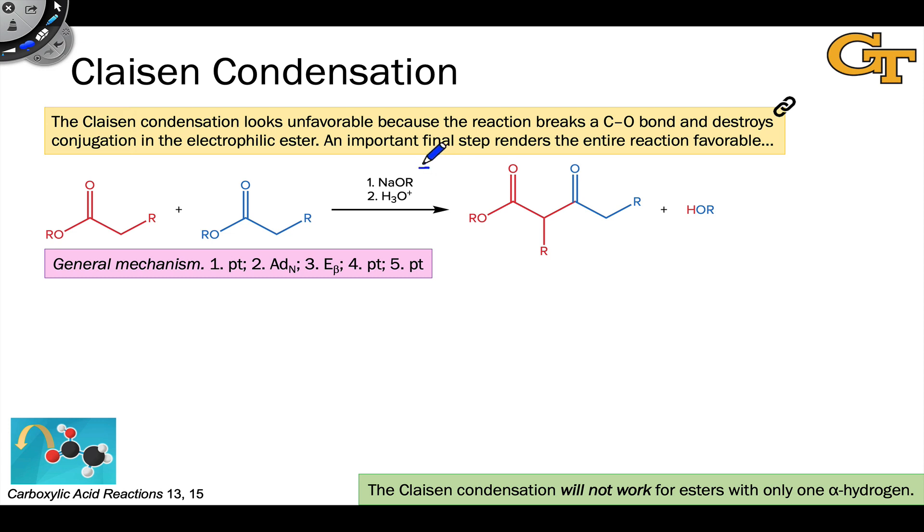The Claisen condensation involves treatment of an ester with an alkoxide base (OR-). In the first step, OR- deprotonates the nucleophilic ester to generate an enolate. Now, OR- is less basic than the enolate that gets generated on the product side, so this step actually favors the reactants. Nonetheless, we do get a small amount of enolate via deprotonation at the alpha carbon. Here we're looking at a dimerization, so it doesn't matter which ester we use or which hydrogen we remove.